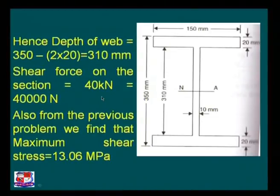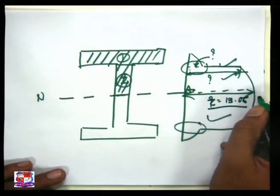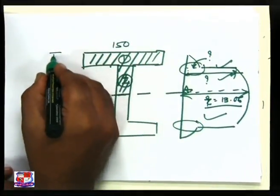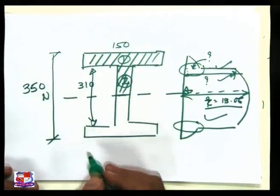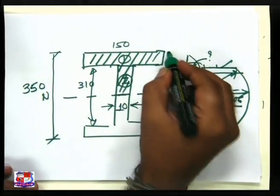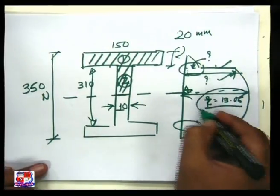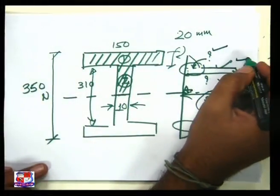From the previous problem, we already found the maximum shear stress is 13.06 MPa, which occurs at the neutral axis. Now the intention is to find the two additional key values — the shear stress at the flange-web junction from the flange side and from the web side.